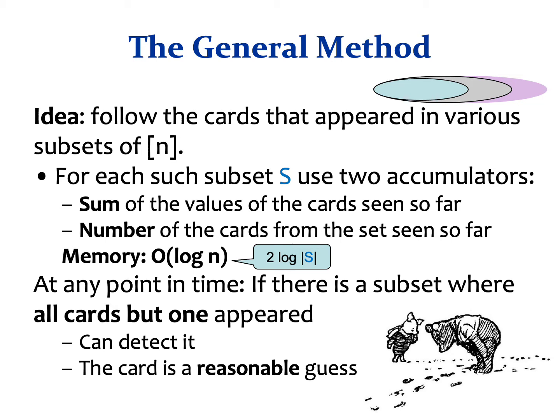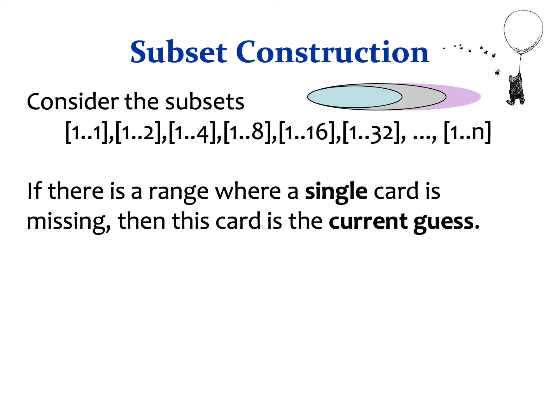In particular, consider the subsets {1..1}, {1..2}, {1..4}, {1..8}, and so forth. Whenever there is a range from which a single card is missing, we guess this card. This is our algorithm. An important property of this construction is that for every two subsets {1..w} and {1..w'} such that w' is bigger than w, if some card is missing from {1..w'}, then it is also the one missing from {1..w}, and there cannot be a different one.